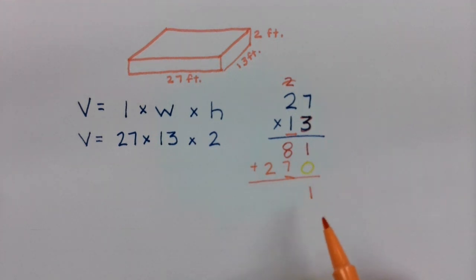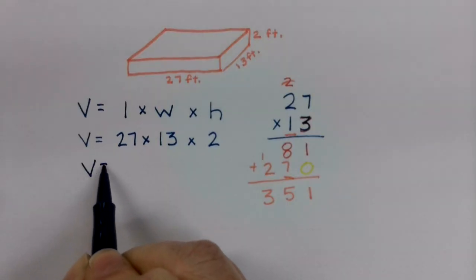1 plus 0 is 1. 8 plus 7 is 15. Here's my 5, carry my 1. 1 plus 2 is 3. So I know that 27 times 13 is going to be 351.